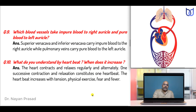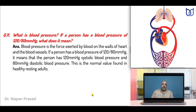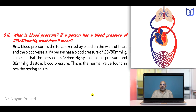What is blood pressure? If a person has a blood pressure of 120/80 mmHg, what does it mean? Blood pressure is the force exerted by blood on the walls of the heart and the blood vessels. A reading of 120/80 mmHg means the person has 120 mmHg systolic blood pressure and 80 mmHg diastolic blood pressure. The higher value is systolic and the lower value is diastolic. This is the normal value found in healthy resting adults.